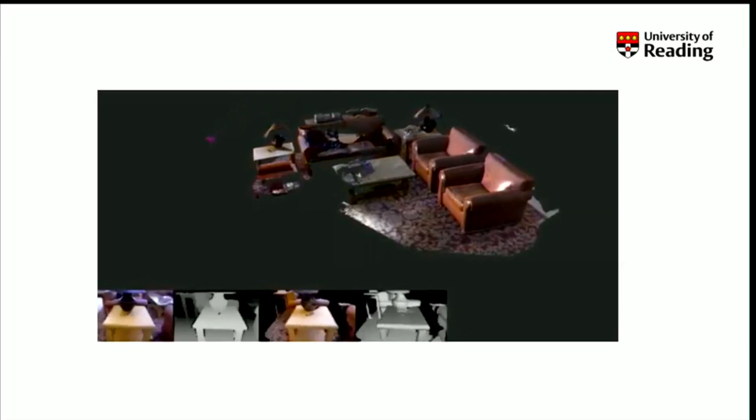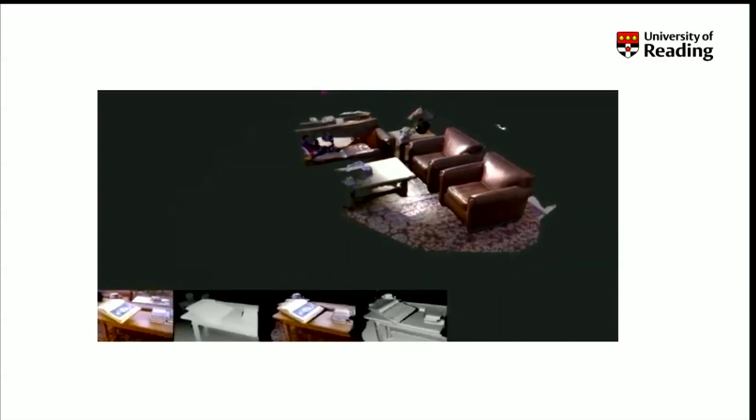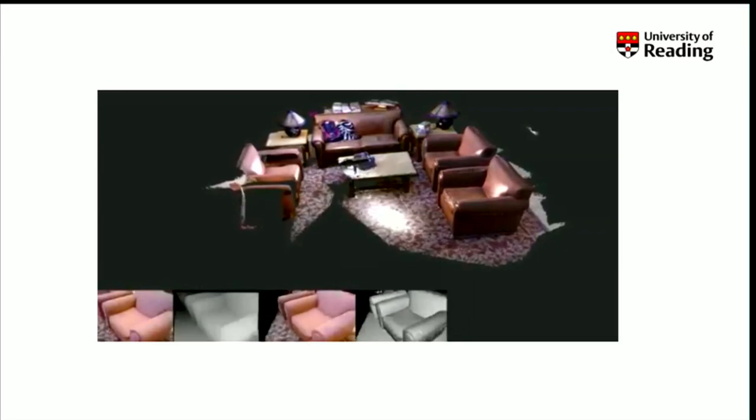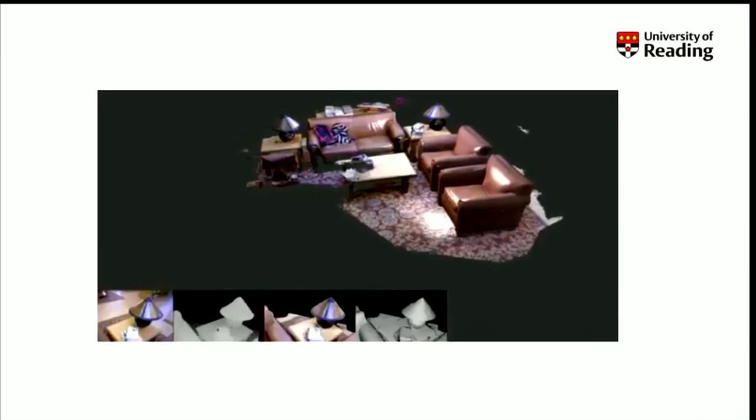In computer vision, there's an obvious answer to this: SLAM. There's a camera moving around, and as the camera moves, it adds to its 3D representation in a world-based frame. That's very good — it's done by all sorts of groups, including autonomous vehicles.